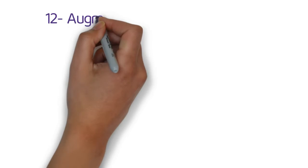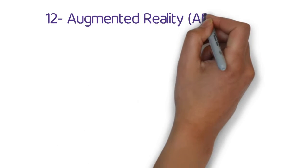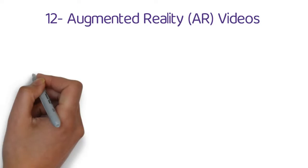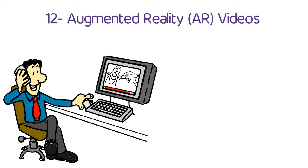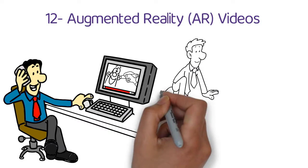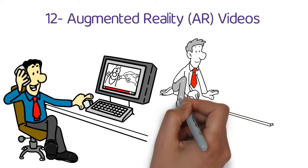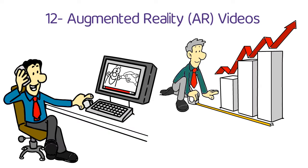12. Augmented reality, also known as AR videos. Videos or images where a digital layer is added to whatever you're viewing is referred to as augmented reality. This style of video is still in its early development stages, but it has a lot of potential.